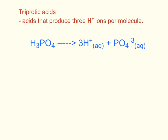Triprotic acids are acids that produce three protons per molecule of acid dissolved in water. Phosphoric acid produces three hydrogen ions when it is dissolved in water. Following our example, if we have a solution of this acid with molarity 2.0, knowing that every molecule gave off three protons, the molarity of hydrogen ions in the solution would be 2.0 × 3 = 6.0.